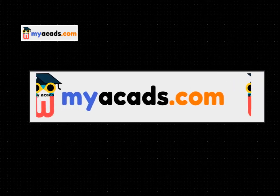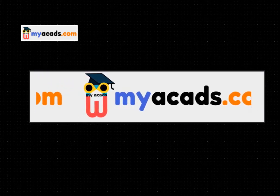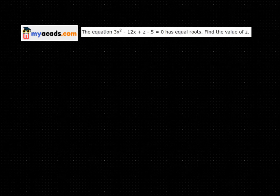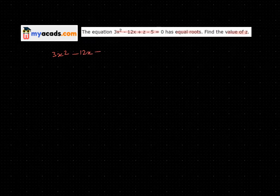Welcome to myacats.com. Let's solve this question. This question is saying that this equation has equal roots, so I have to find the value of z. My equation is 3x squared minus 12x plus z minus 5 equals 0.